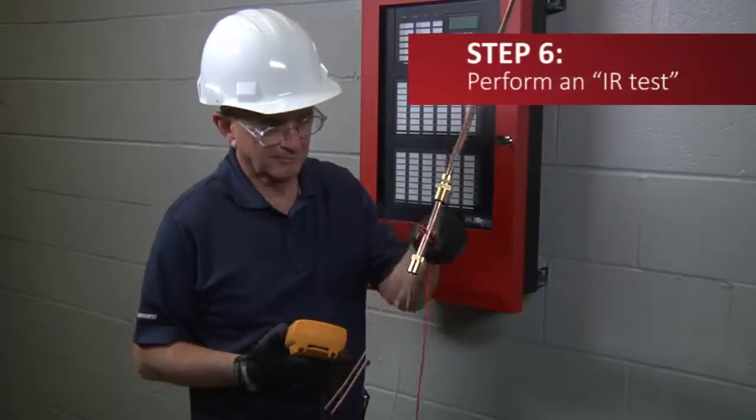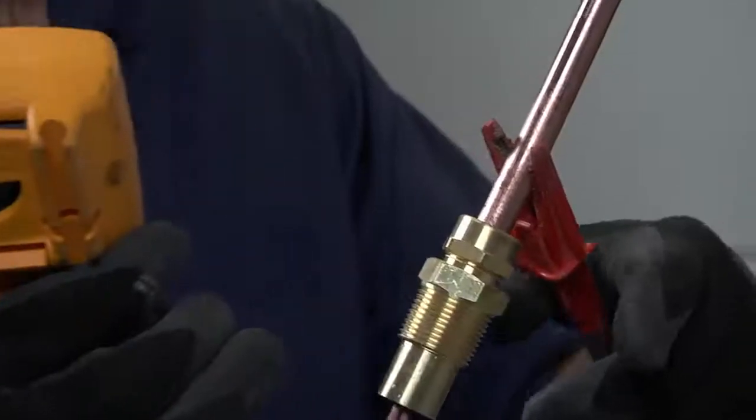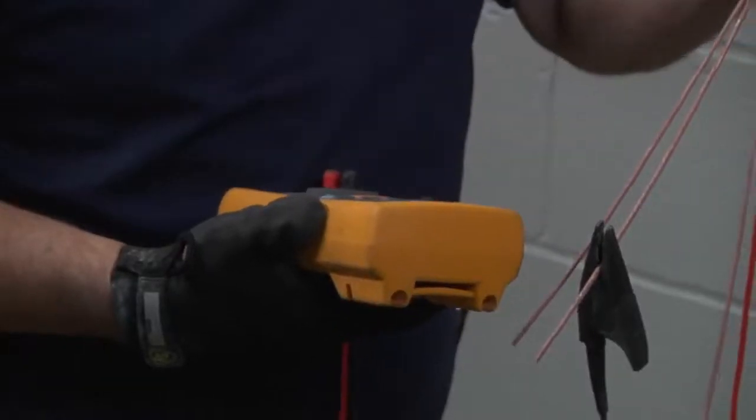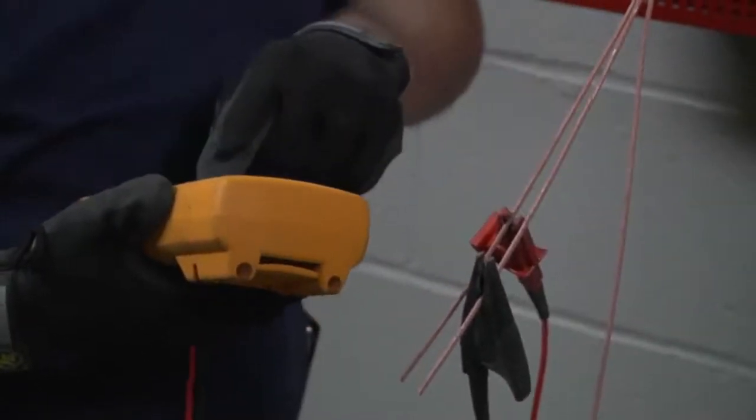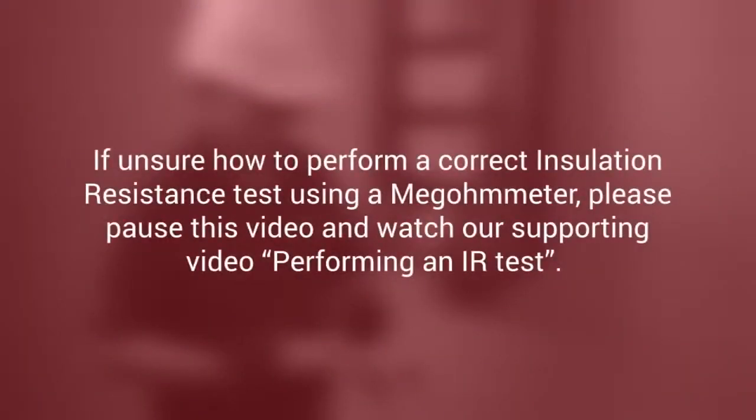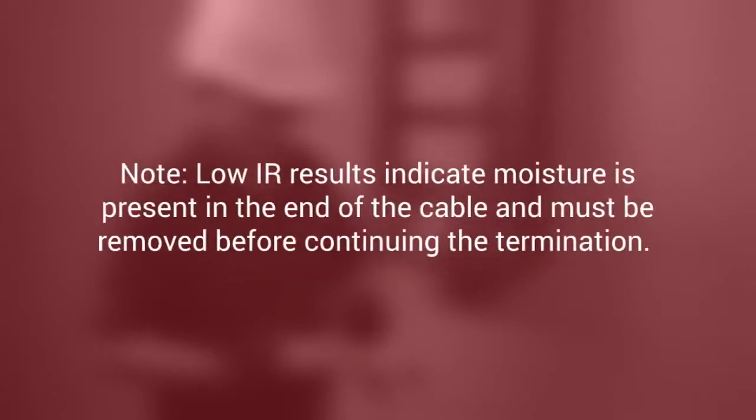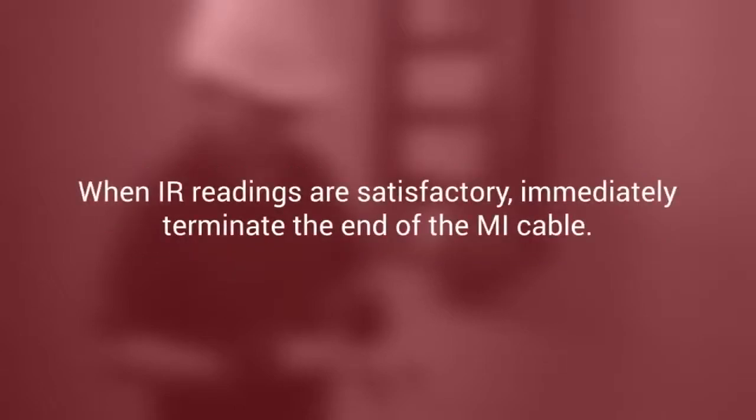Next, you must perform an insulation resistance test using a megameter set to 500 volts DC to check the insulation resistance of the cable between the conductors and the sheath, and from conductor to conductor, to ensure that they are free of grounds and shorts. The other cable end must be terminated and sealed or a low IR reading will result. If unsure on how to perform a correct insulation resistance test using a megameter, please pause this video and watch our supporting video, Performing an IR Test, for detailed test procedures and IR test criteria. Note that low IR results indicate that moisture is present in the end of the cable and must be removed before continuing the termination. When IR readings are satisfactory, immediately terminate the end of the MI cable, or a delay can cause the IR to drop and the cable must be retested prior to terminating the end.